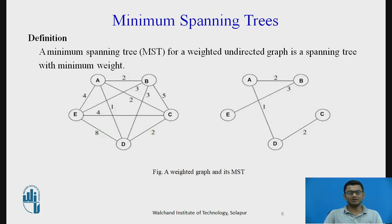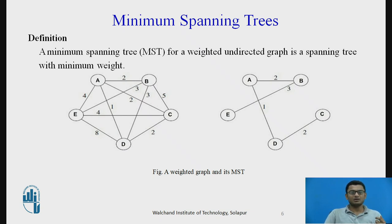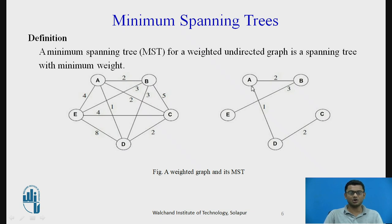A minimum spanning tree for a weighted undirected graph is a spanning tree with minimum weight. A graph may have many spanning trees, but the one with the least weight is called the minimum spanning tree. In the left diagram there is a weighted graph, and on the right is its minimum spanning tree. Edge BE has weight 3, AD has weight 1, AB has weight 2, and CD has weight 2.